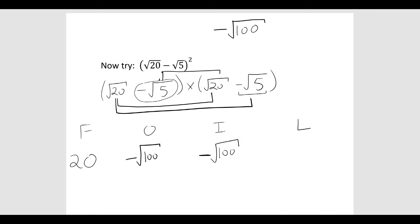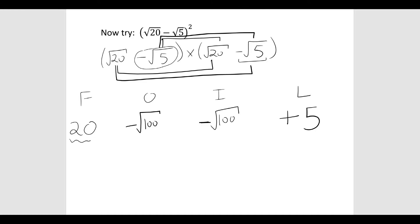Finally, minus root 5 times minus root 5 is plus 5. So let's do what we did before. 20 plus 5 is 25. Minus root 100 take away root 100, is minus 2 root 100.